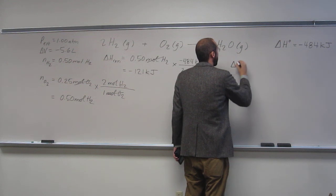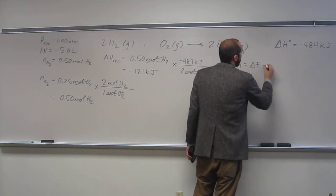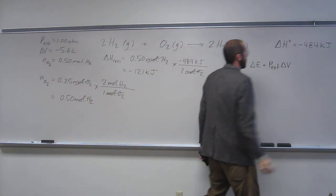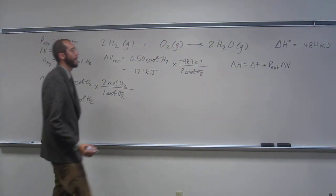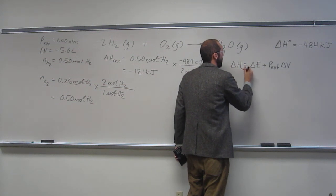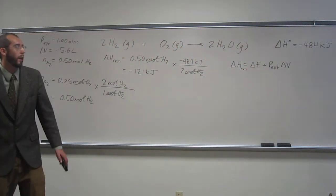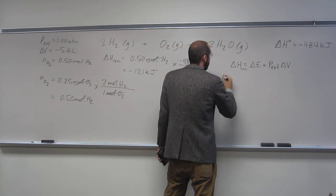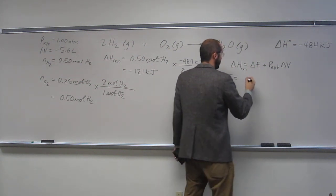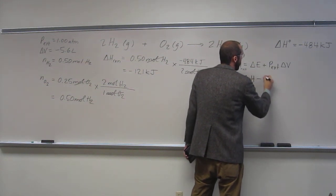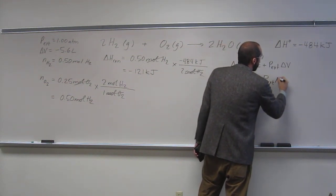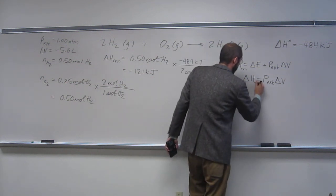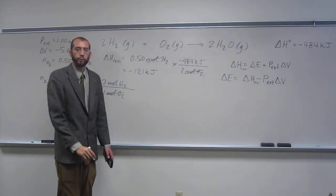So we now have to remember that delta H equals delta E plus P external times delta V. So in this case, it's the delta H of the reaction that we just figured out. And now all we have to do is isolate the variable and plug and choke. So delta E is what we're looking for. So that's going to equal delta H minus P EXT times delta V. This is delta H of the reaction.